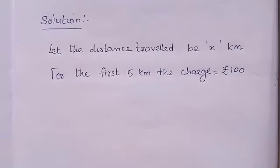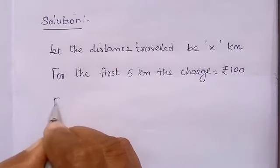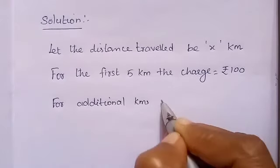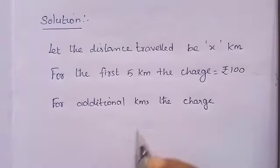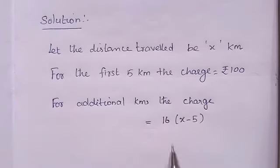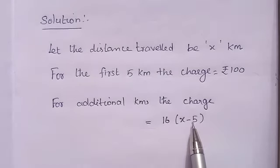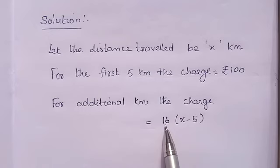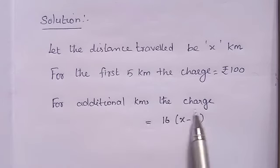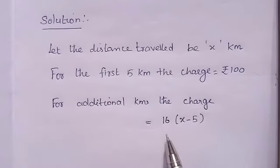And also given, for every additional km, they charged Rs. 16. So, for additional km, the charge equals Rs. 16 into (x minus 5). For example, if x equals 6, then 6 minus 5 equals 1, so 1 km is the additional km — 1 into 16 equal to 16. If x equals 7, then 7 minus 5 equals 2 km additional — 2 into 16 equal to 32. So for additional km, the charge is equal to 16 into (x minus 5).